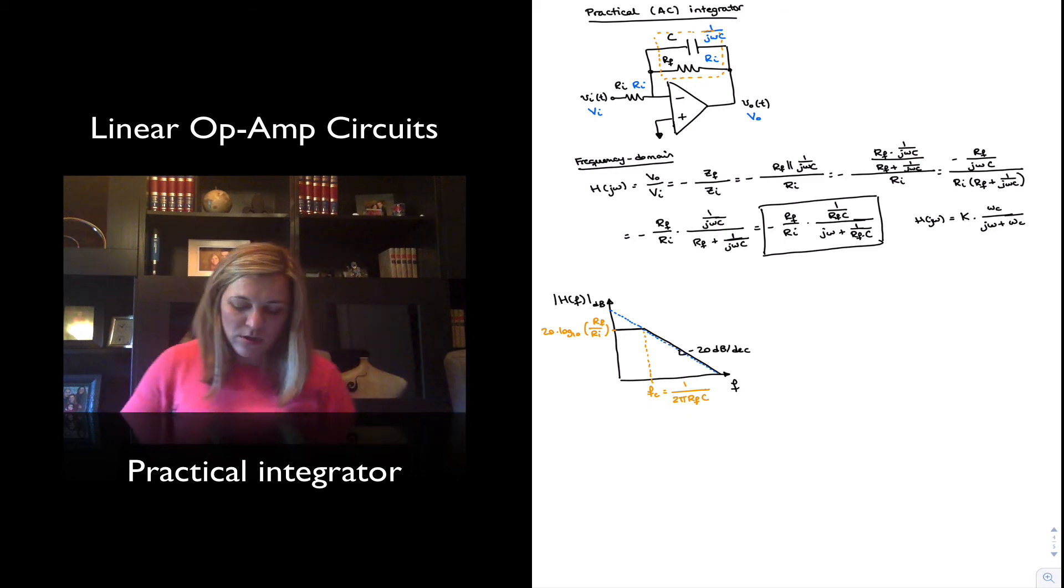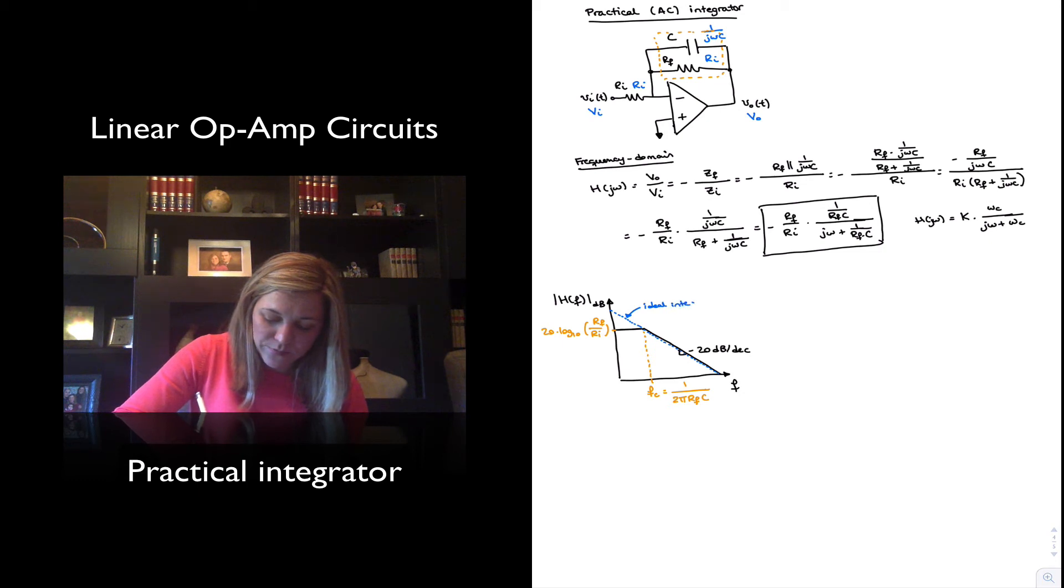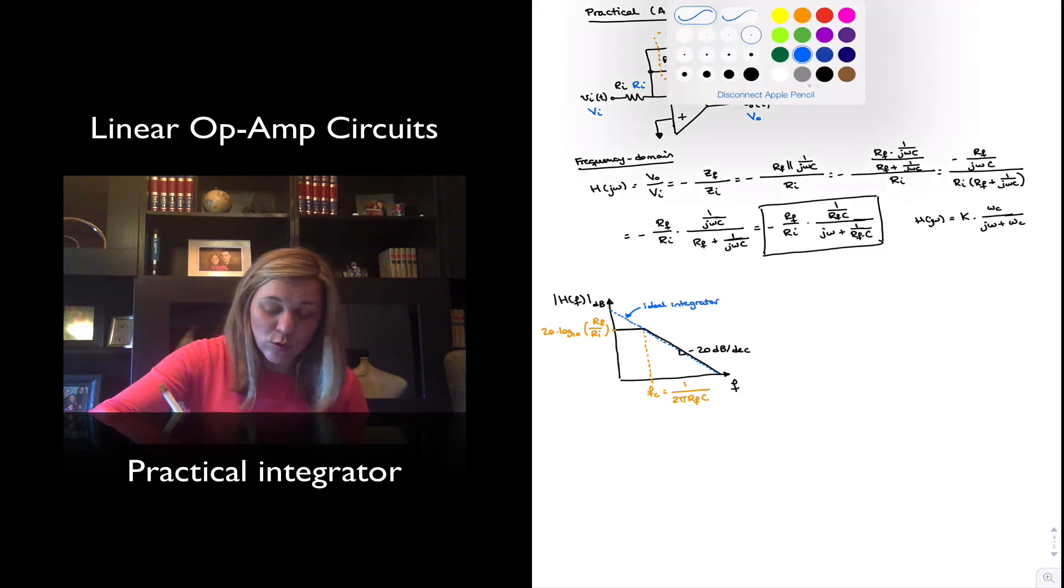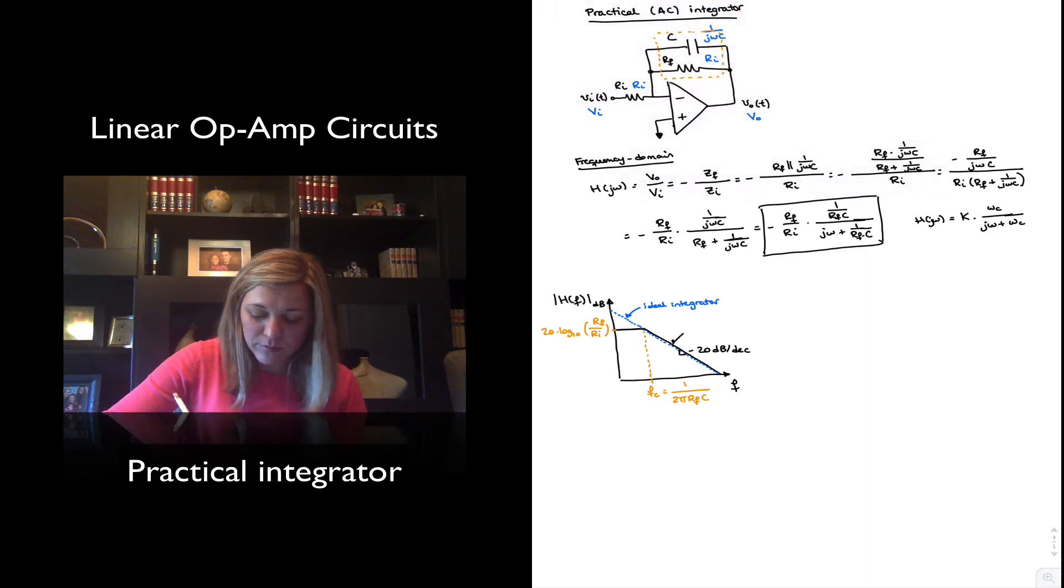Whereas this one goes flat and then basically starts to decay at minus 20 dBs per decade. So I'm going to label this as the ideal integrator, and the other one is the first order low-pass filter, which we have also labeled as the practical or AC integrator.